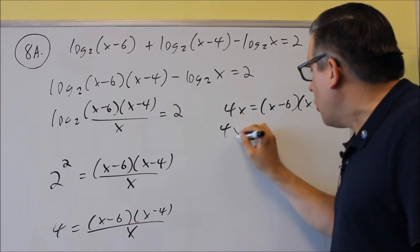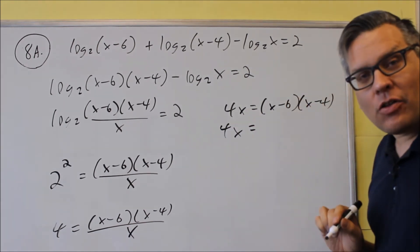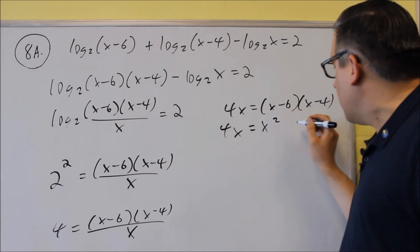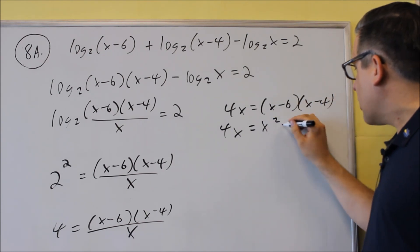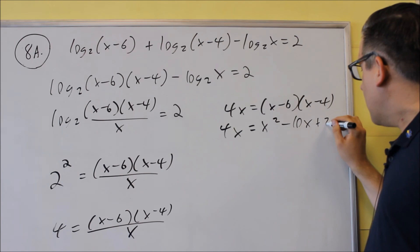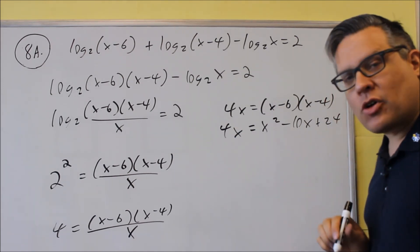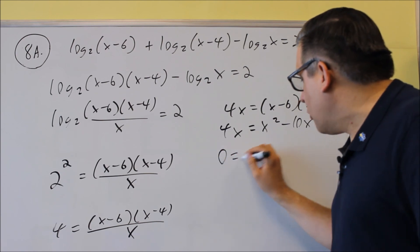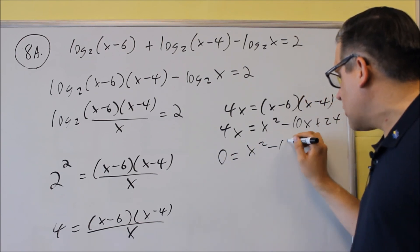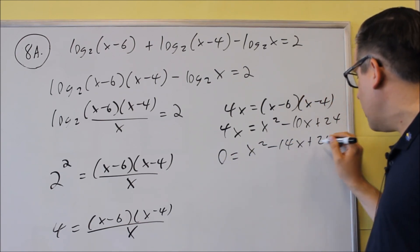So at this point, we have to multiply the part after the equal sign. So we're going to do x squared, we get minus four minus six minus ten x, and then we get plus twenty-four. We want to subtract the four x because we want to get it equal to zero, and when we do that, we get x squared minus fourteen x plus twenty-four equals zero.